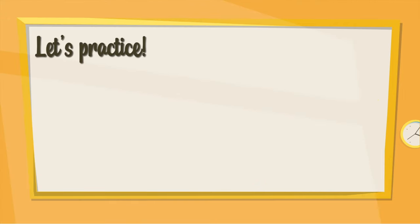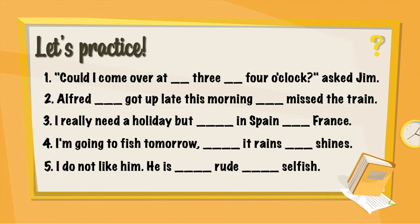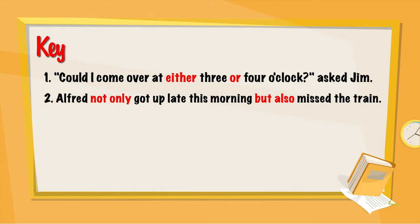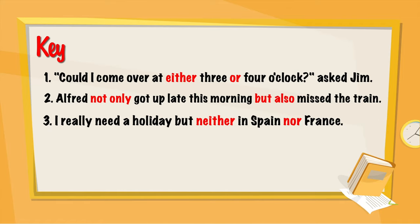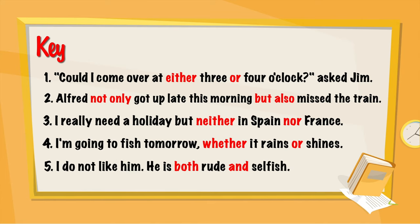So now let's practice. I will give you five minutes to complete the sentences, then we'll look at the key. Please pause the video. Now that you have your answers, let's take a look at the key. Number one: could I come over at either three or four o'clock, asked Jim. Number two: Alfred not only got up late this morning, but also missed a train. Number three: I really need a holiday, but neither in Spain nor France. Number four: I'm going to fish tomorrow, whether it rains or shines. Number five: I don't like him — he's both rude and selfish.